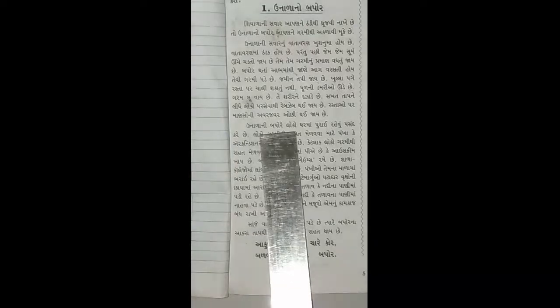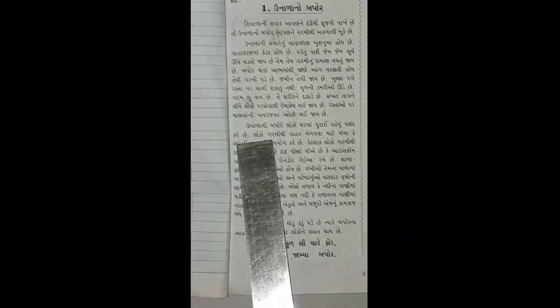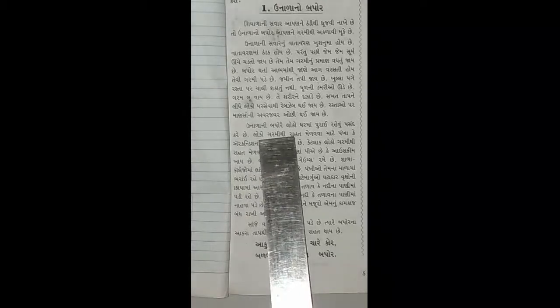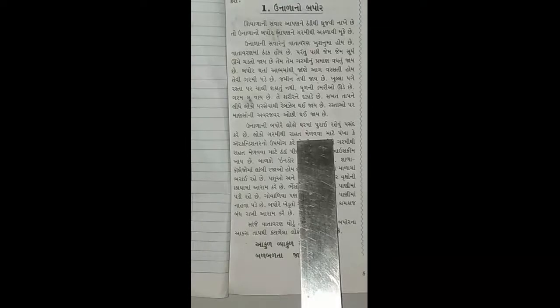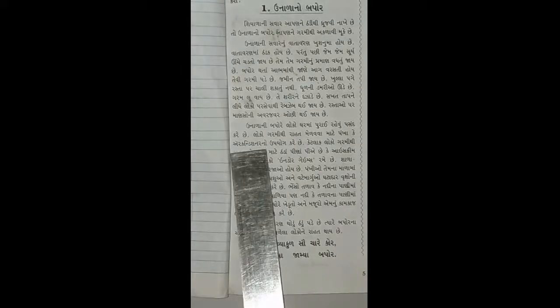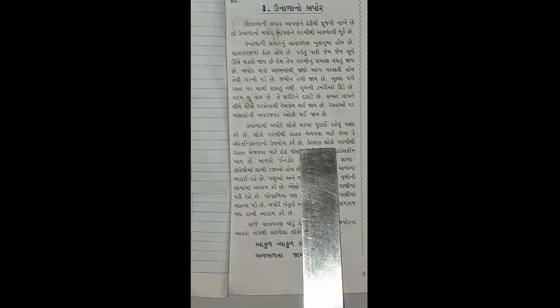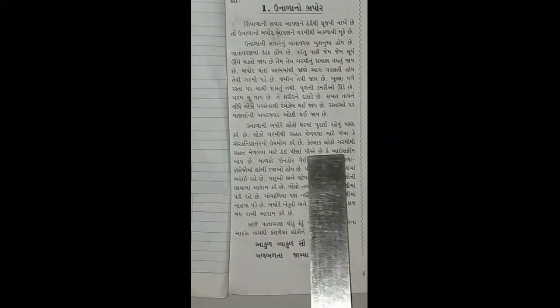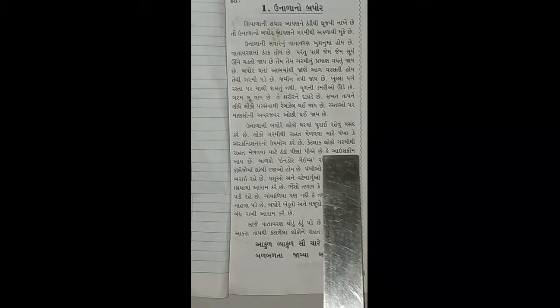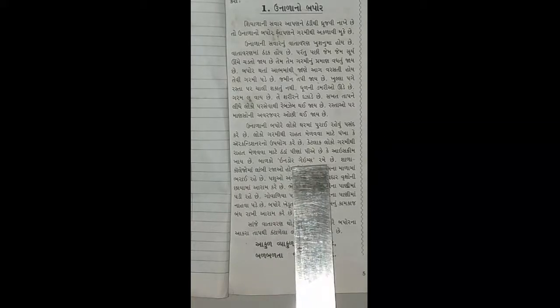ઉનાળાની બપોરે લોકો ઘરમાં પૂરાઈ રહેવું પસંદ કરે છે. લોકો ગરમીથી રાહત મેળવવા માટે પંખા કે એર કન્ડિશનરનો ઉપયોગ કરે છે. કેટલાક લોકો ઠંડા પીણાં પીએ છે કે આઈસક્રીમ ખાય છે. બાળકો ઇન્ડોર ગેમ્સ રમે છે.